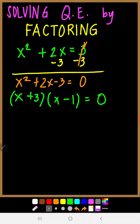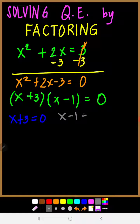We use those two numbers — positive 3 and negative 1 — to factor the equation, and then apply the zero product property. Applying the zero product property means we equate each factor to zero. Since quadratic equations have two roots, we get two equations: x plus 3 equals 0, and x minus 1 equals 0.